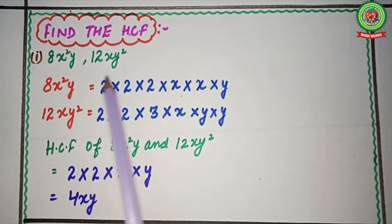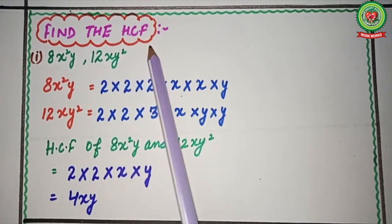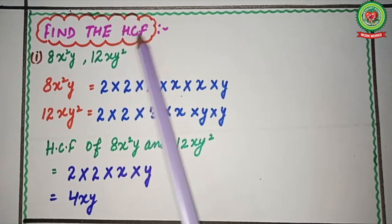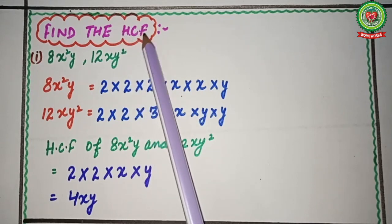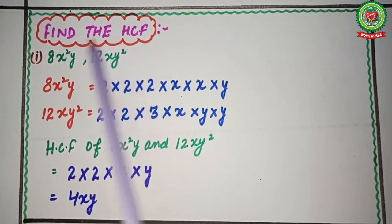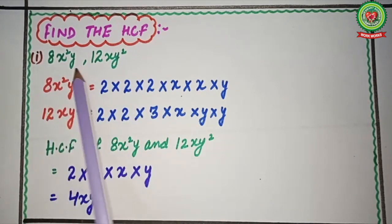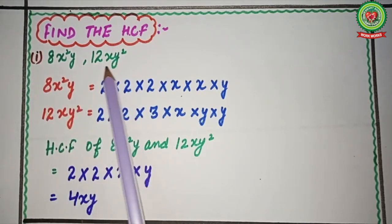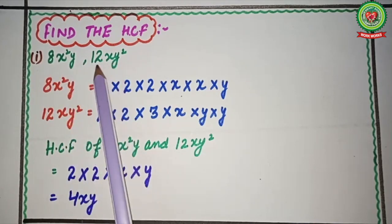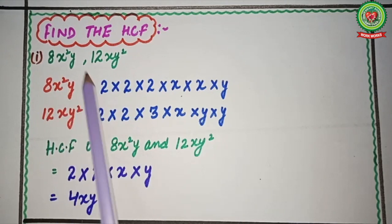The first statement is: find the HCF. HCF means Highest Common Factor. We have to find the highest common factor from the given statement. Two terms are given to us: 8x²y and 12xy². So we will write the first term, 8x²y, and find its factors.